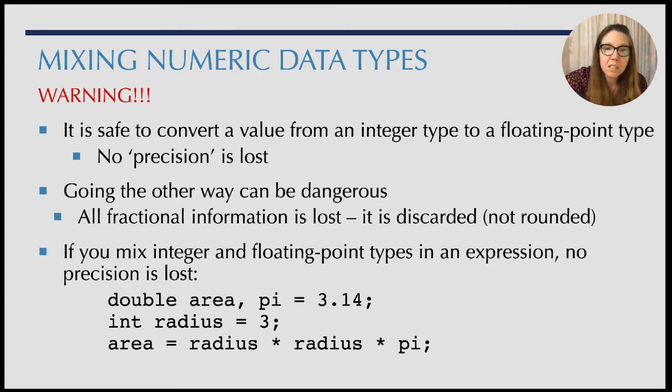So there is a warning when we mix numeric data types together - we can have unexpected results. It's safe to convert a value from an integer type to a floating point type. For instance, if we take the number five and we move it to 5.0, no precision is lost. We've just added a place to store more precise information should we have anything after that decimal at a later point in time. Going the other way can be dangerous. So if we took the floating point number 5.3 and we moved it to an integer, what would we do with that .3? The best we can do is preserve the 5, and so in fact all fractional information is lost - that .3 is just discarded, it's not rounded. So if we took 5.9 and moved it to an integer, we actually move that to 5, really losing a huge part of information by removing and discarding that .9.